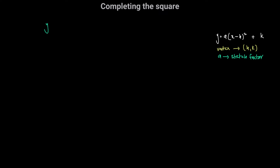Let's look at another example. Say I have the following equation for a parabola: y is equal to negative x squared minus 4x plus 3. Again, I want to write this quadratic expression in the completed square form and find the coordinates of the vertex, or the turning point, for this parabola. We can equate this to the completed square form.